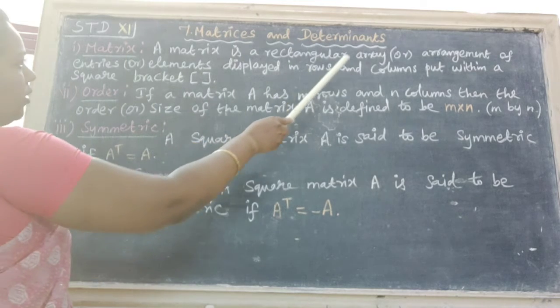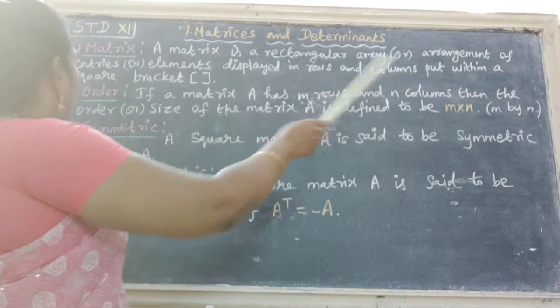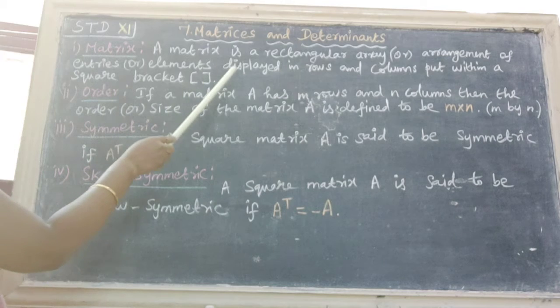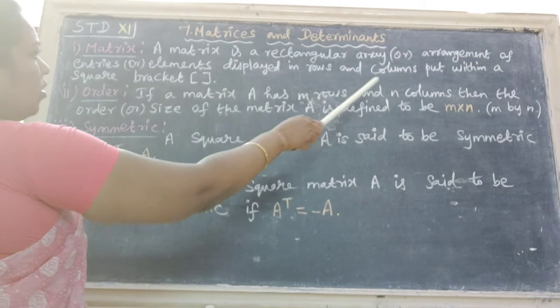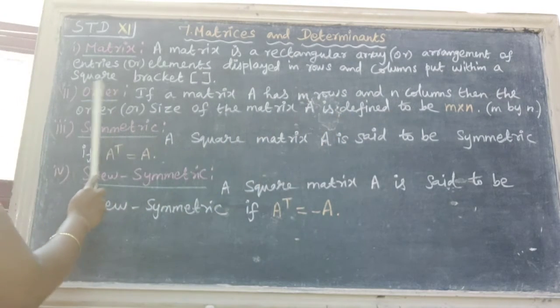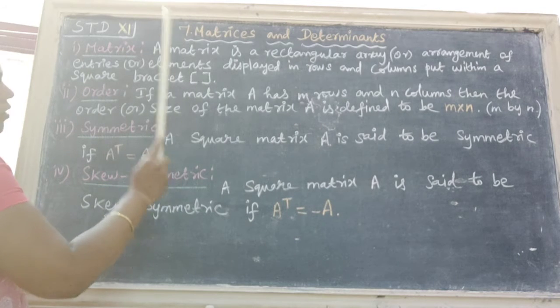A matrix is a rectangular array or arrangement of entries or elements displayed in rows and columns put within a square bracket, that is the square bracket.